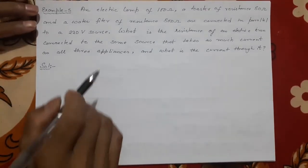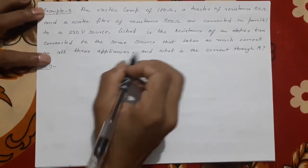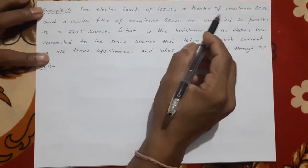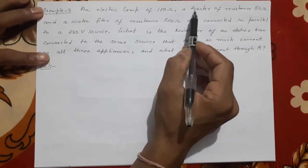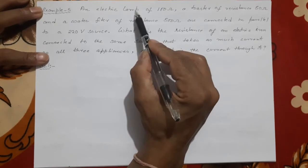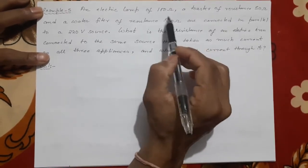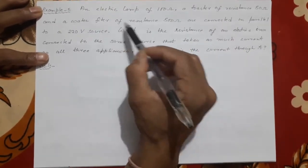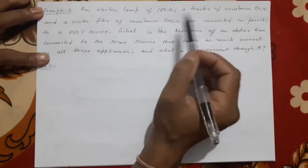Okay, this question is like this. Suppose you have one electric lamp 100 ohms, toaster 50 ohms—no need to know what is the device, because all are resistance—150, and water filter 500 ohms. That means R1, R2, R3 like that.